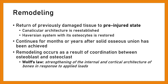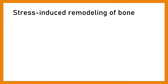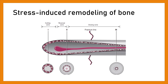Remodeling: Return of previously damaged tissue to pre-injured state. Canalicular architecture is re-established and the Haversian system with its osteocytes is restored. Continues for months or years after solid osseous union has been achieved. Remodeling occurs as a result of coordination between osteoblasts and osteoclasts. Wolff's law: Strengthening of the internal and cortical architecture of bones in response to applied loads. Stress-induced remodeling utilizes an osteoclastic cutting cone crossing the fracture gap, followed by bone reconstitution by the trailing osteoblast, with osteoclast and osteoblast actions coupled in the functional unit of the cutting cone.